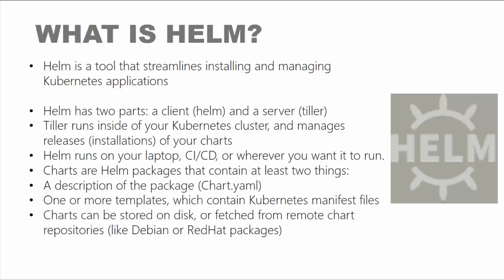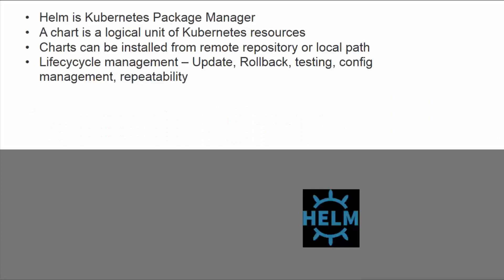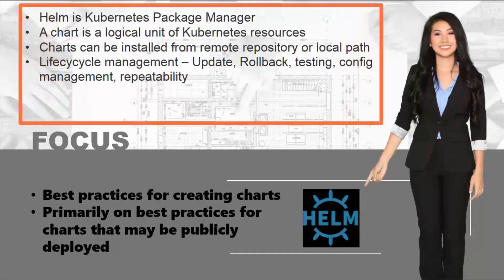Charts are Helm packages that contain at least two things: a description of the package, which is the chart.yaml file, and one or more templates which contain the Kubernetes manifest files. Charts can be stored on disk or fetched from a remote repository like Debian or Red Hat packages. A chart is a logical unit of Kubernetes resources and can be installed from a remote repository or local path. The lifecycle management includes updates, rollback, testing, configuration management, and the most powerful feature — repeatability.